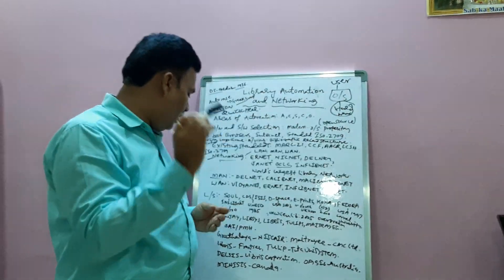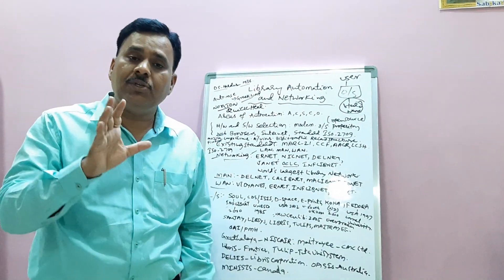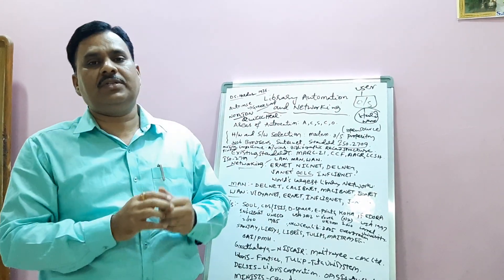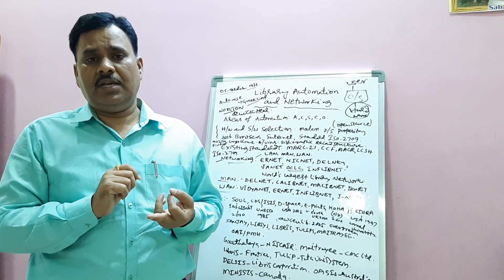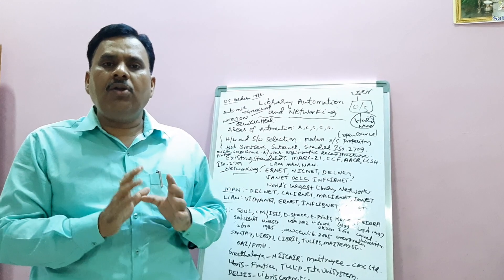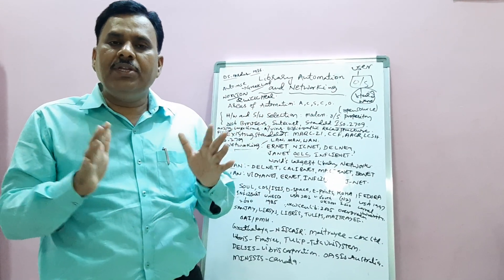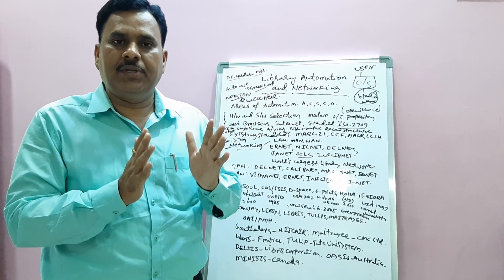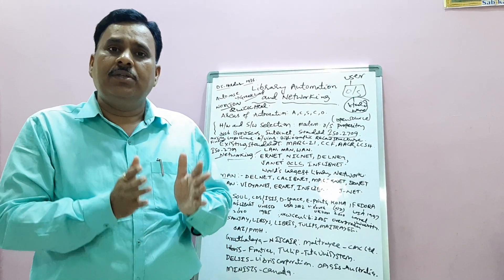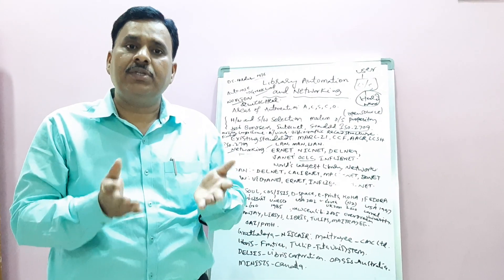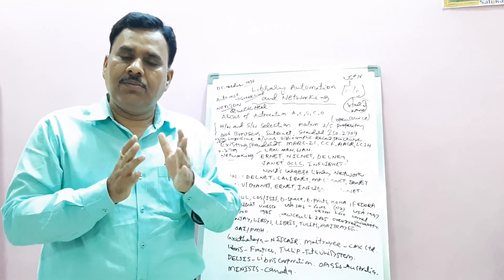Next we will see library automation software. Different types of automation software and digital library software are available. We need to think about what an automated library is versus a digital library. An automated library works on modules and can preserve data in electronic format. There are various differences between automation software and digital library software. CDS/ISIS — Computerized Documentation Service Integrated Set of Information Systems — was developed by UNESCO and was the first major library automation software.